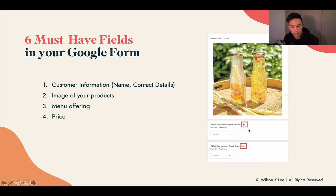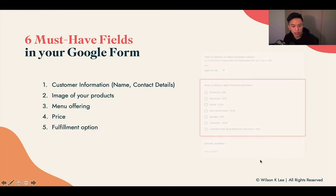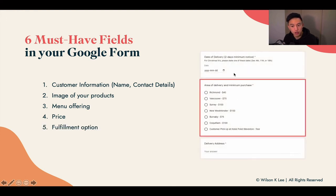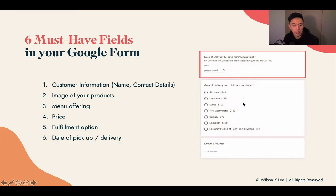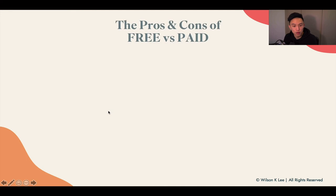Next up, the pricing — the prices associated with each menu item. Then the fulfillment option: are they going to do pickup or delivery? And if they're doing delivery, where are they located? Because different locations have different delivery fees as well. And lastly, the date of delivery or the date of pickup, depending on when they are available and when they want their items. These are the six must-have items for your Google Form.